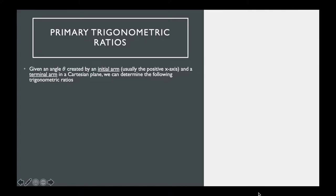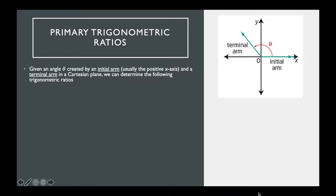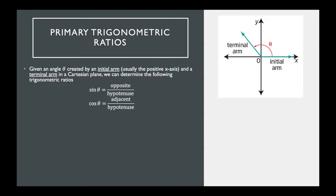Hopefully everyone remembers how to find trigonometric ratios. The first thing is we draw out the angle itself. If we're given a point, we draw a terminal arm, and the angle is created going from the positive x-axis all the way up to the terminal arm. Once we have that angle drawn, we can find the three primary trig ratios: sine, cosine, and tan.